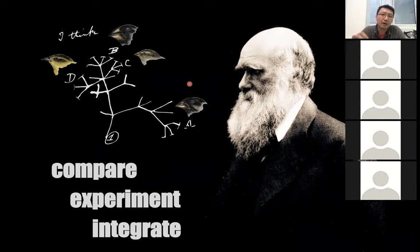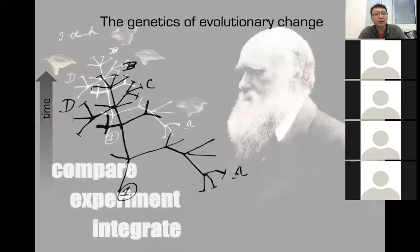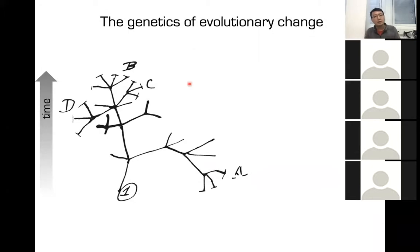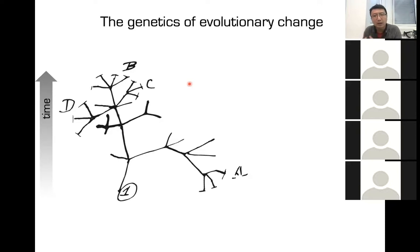One of Darwin's insights was comparison across lineages. These finches collected from different islands show the results of adaptation and revealed the hand of selection. This allows him to see differences that normally would take a long time to accrue, and selection has already done the work to identify meaningful differences. If he were to look at a single lineage, meaningful changes fixed within it wouldn't be visible — he had to compare across populations.